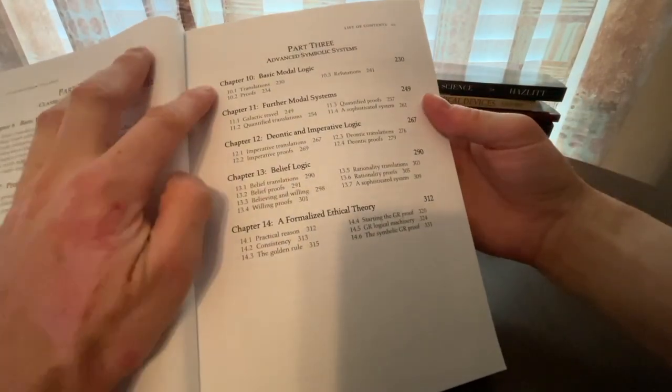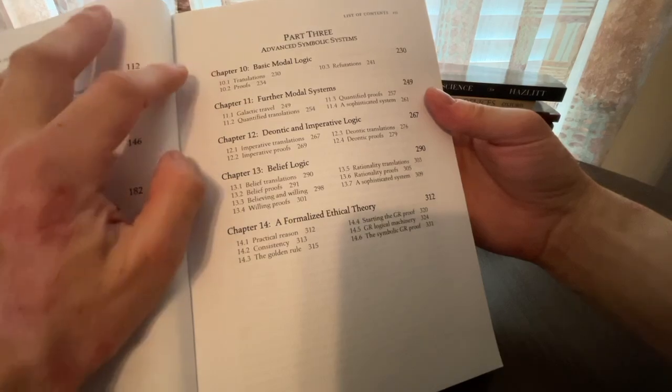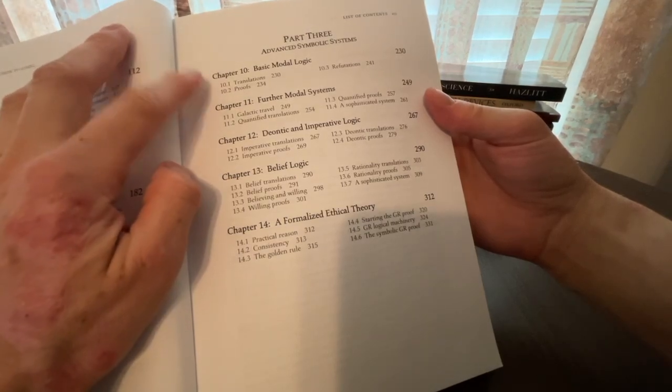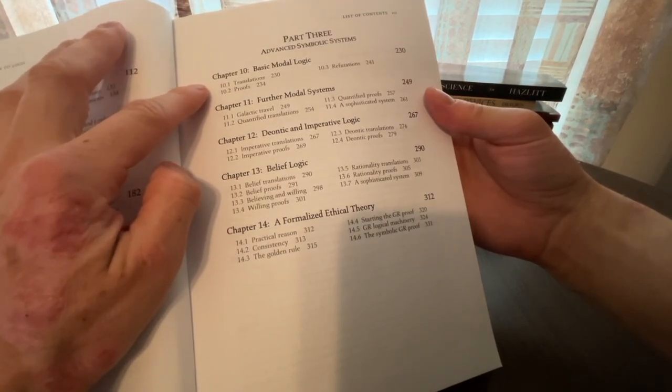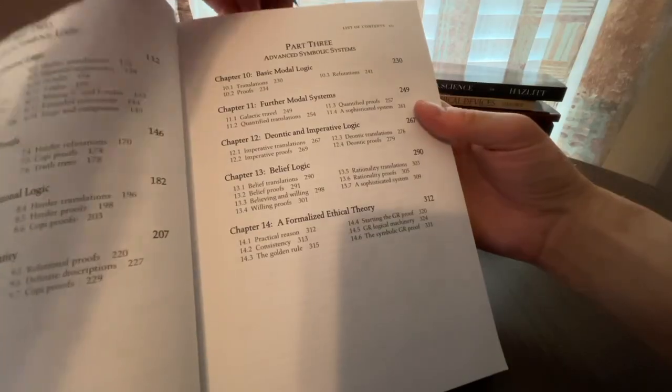Then you have classic symbolic logic with propositional logic and predicate logic. And then for our purposes, most importantly, advanced symbolic systems, part three, where chapter 10 is on basic modal logic, which is what we will be talking about and doing some exercises from. So let's jump to chapter 10, and I want to very briefly talk about the exercises.